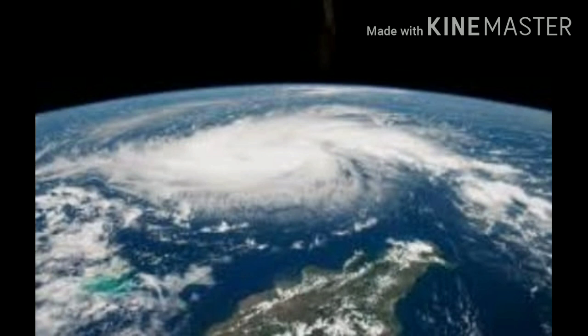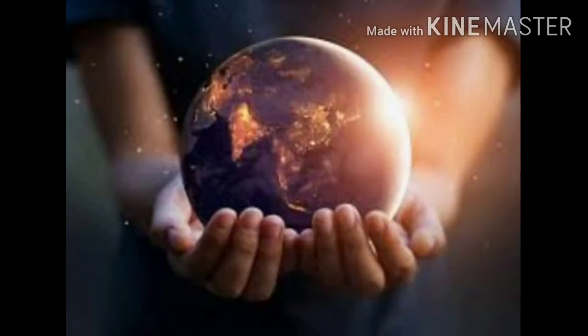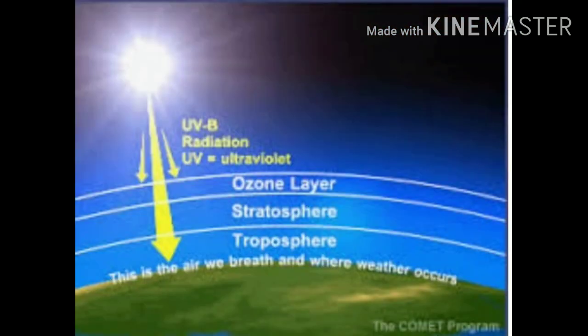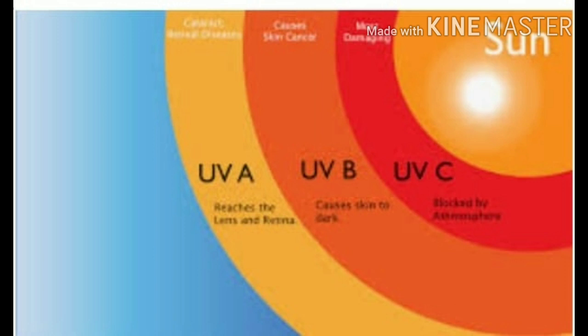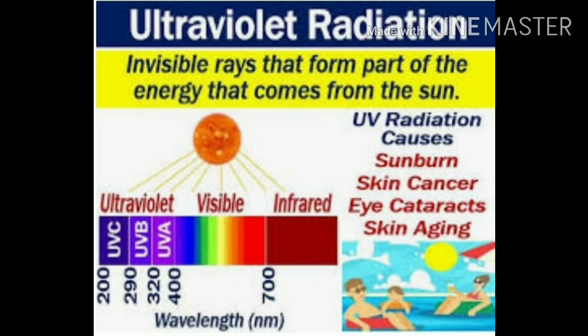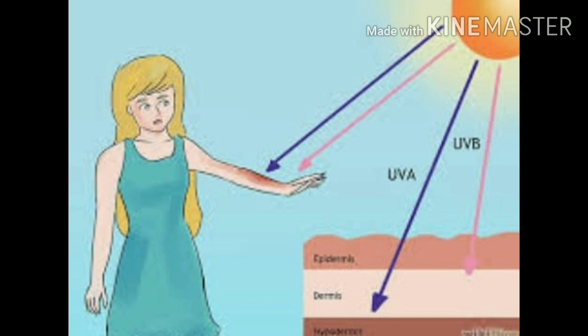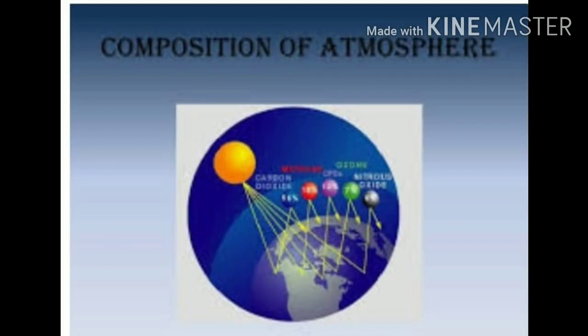The atmosphere is one of the most important components of the environment on Earth. In the absence of the atmosphere, life would not have been possible on Earth. The atmosphere protects the Earth from harmful ultraviolet radiation from the sun. Ultraviolet radiations, or UV rays, are invisible rays that are part of the energy that comes from the sun and can burn the skin and cause skin cancer.